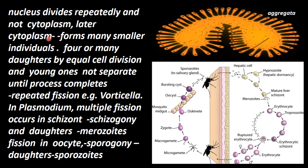Later, the cytoplasm divides and forms many smaller individuals, which get detached and go away. This organism forms many smaller individuals — four or many daughter cells — by equal cell division, and the young ones are not separate until the process is complete. This is called repeated fission.